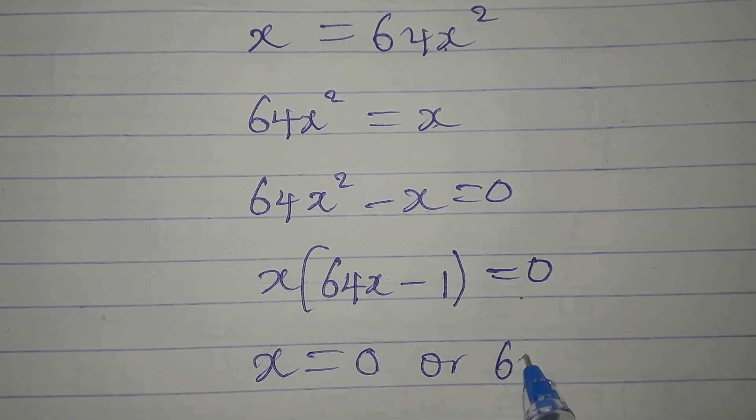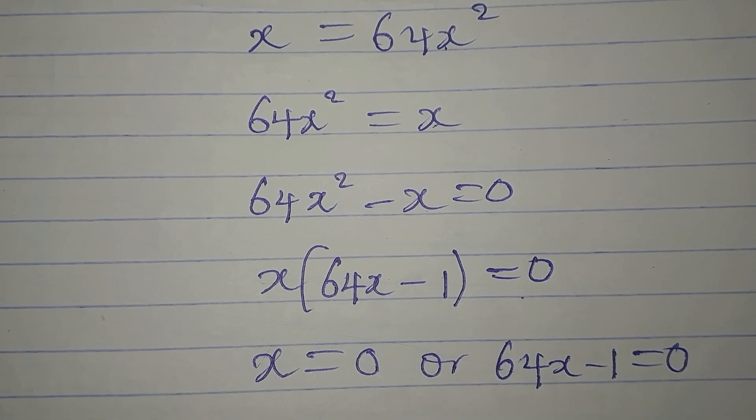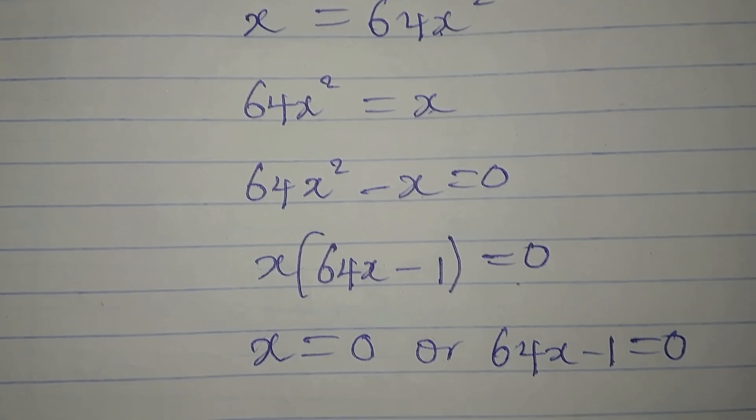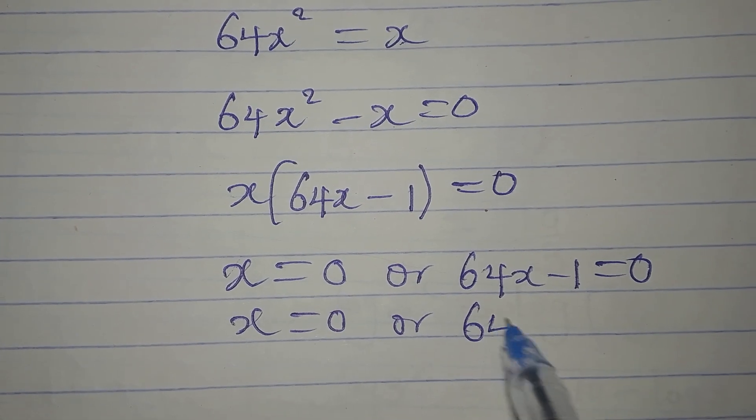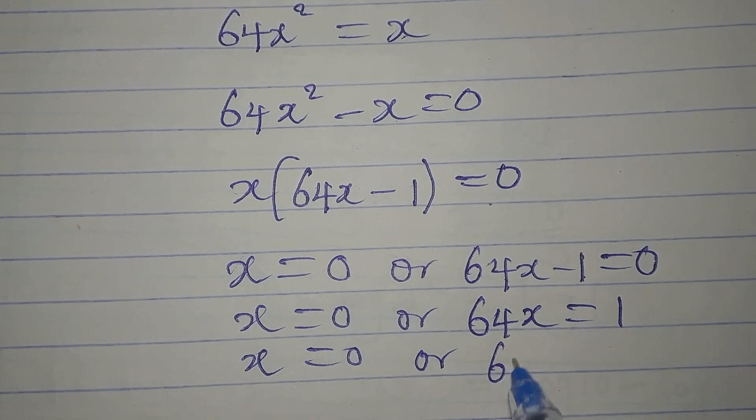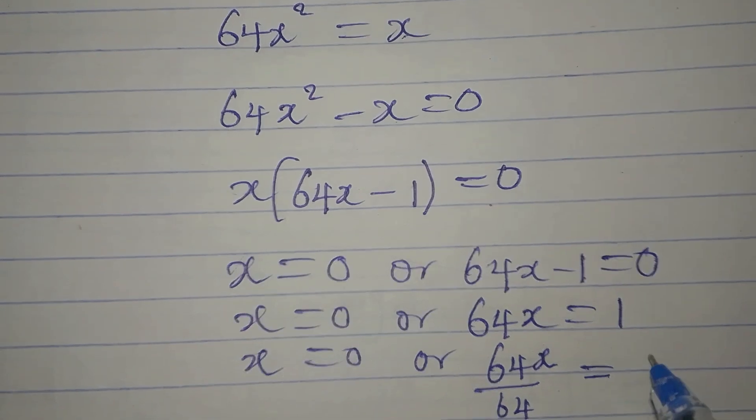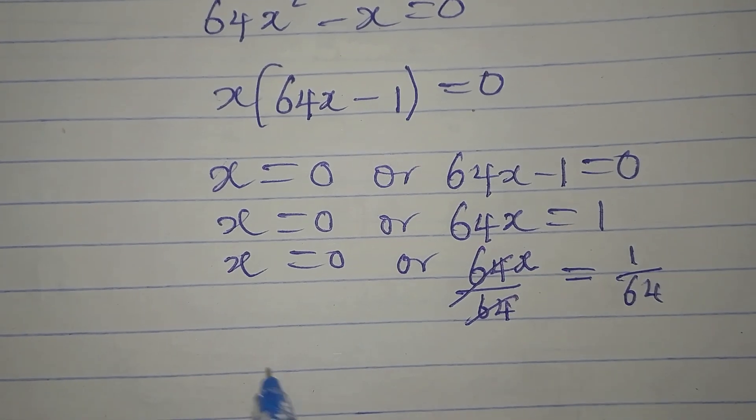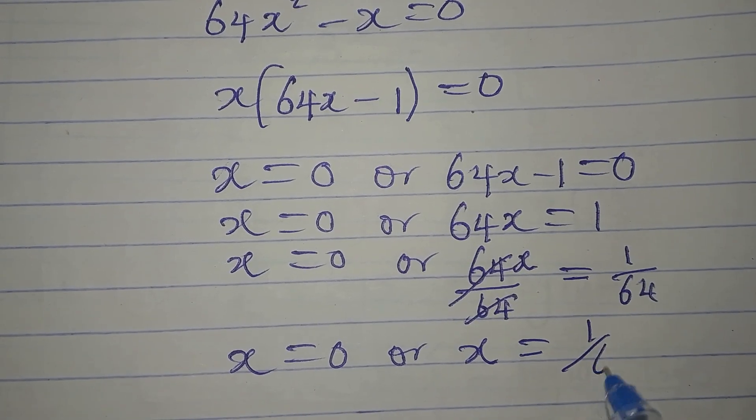So our x is zero or 64x minus 1 equals zero. I apply this method because we are to multiply these two together, so one of them has to be zero. Our x remains zero, or 64x is 1. So x is equal to zero or x divided by 64 is equal to 1 divided by 64. Our x here remains zero or x here is equal to 1 over 64.